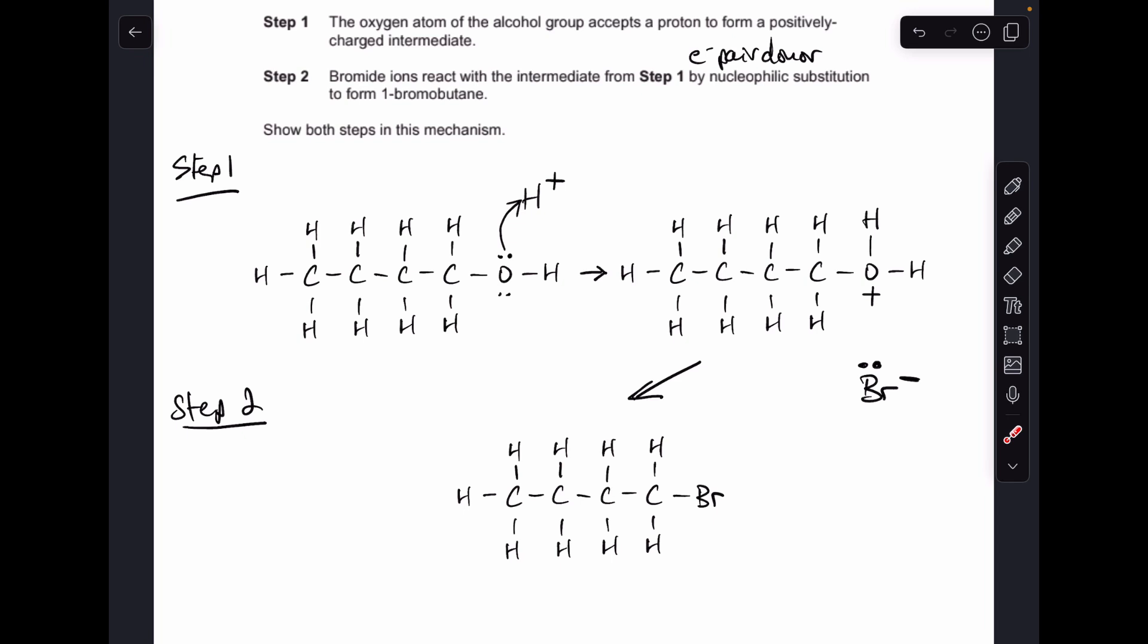So the way that's going to work is the bromide ion is going to donate a pair of electrons to that carbon. And that ties in with the fact that it's nucleophilic substitution. Remember, a nucleophile is an electron pair donor. So we need to draw a curly arrow from that pair of electrons onto that carbon.